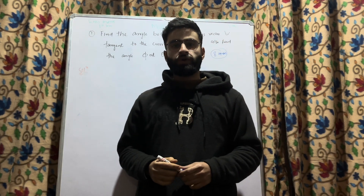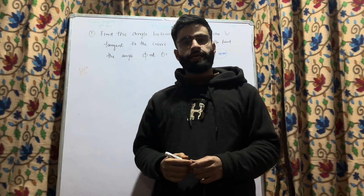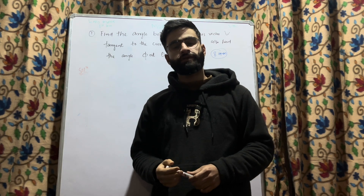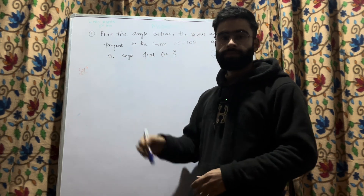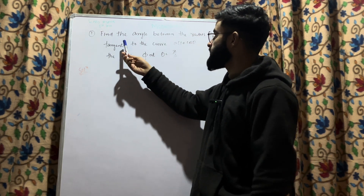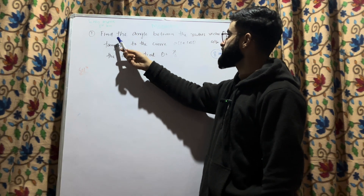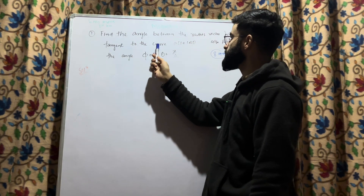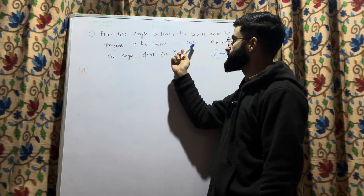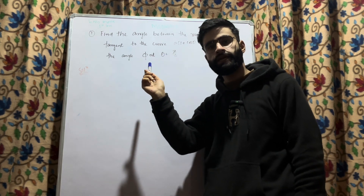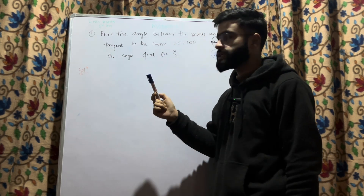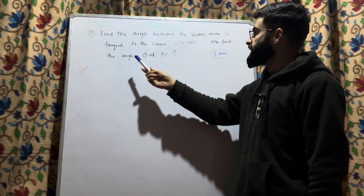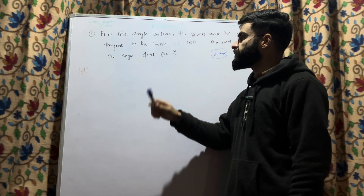Dear engineering students, I welcome you all into my channel again. Hope you are all doing well. In the previous lectures we have discussed about derivations and one problem we have already discussed. Today I am with another important problem: find the angle between the radius vector and the tangent to the curve r = A(1 + cosθ). This question is frequently asked in the BTO examination and is an 8-marks question. Also find the angle φ at θ = π/6.